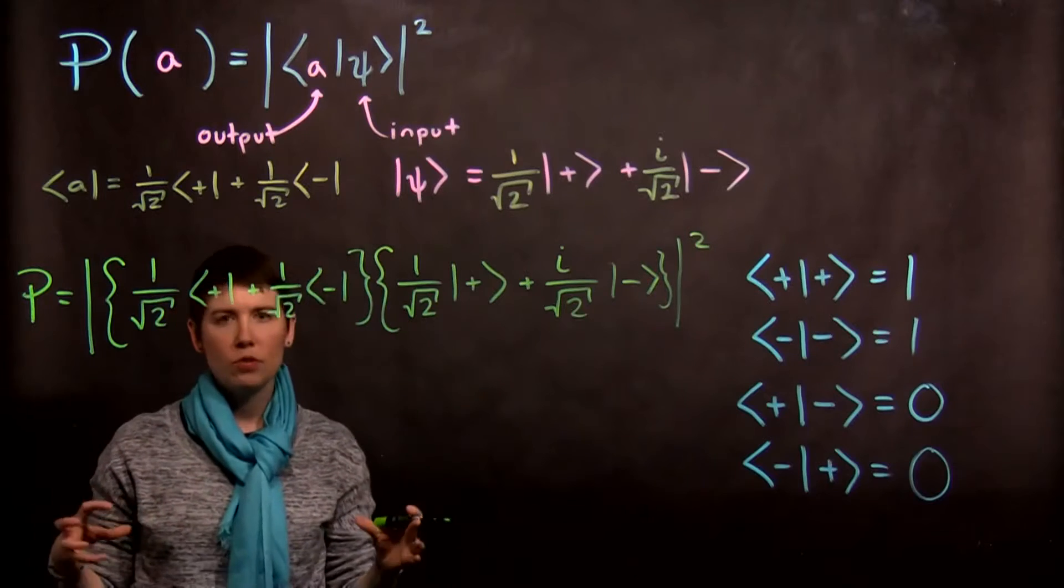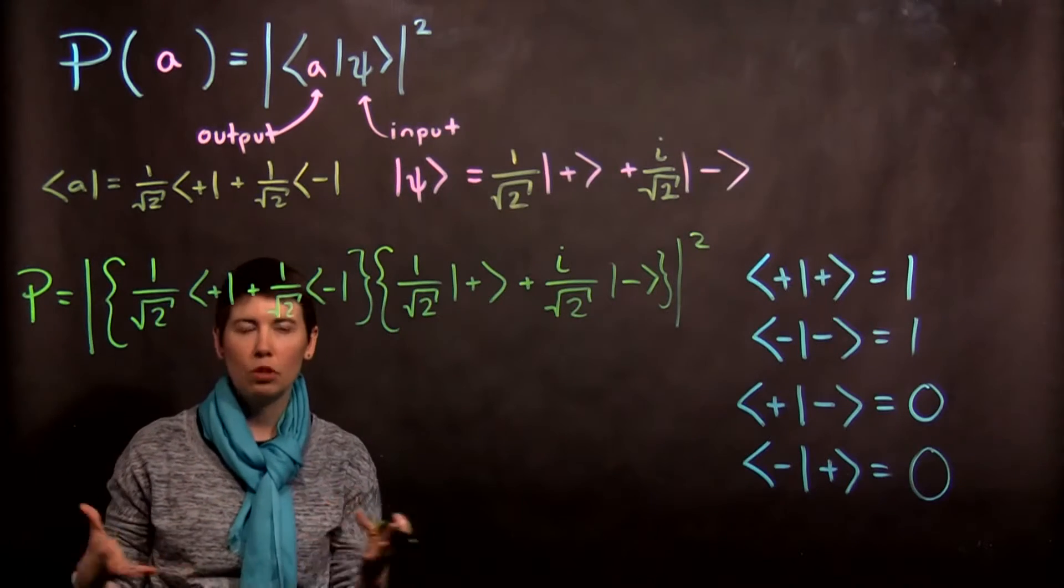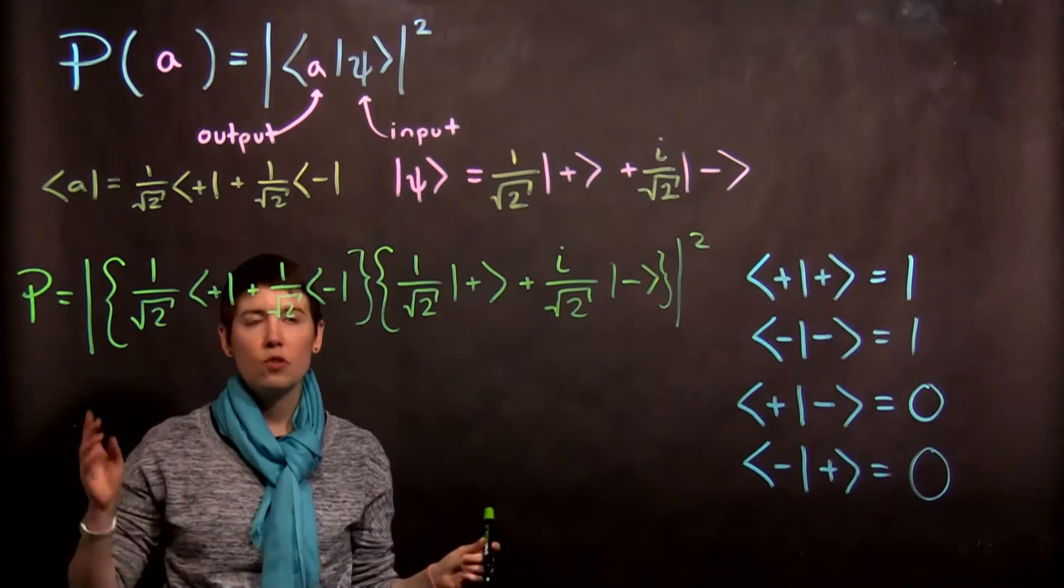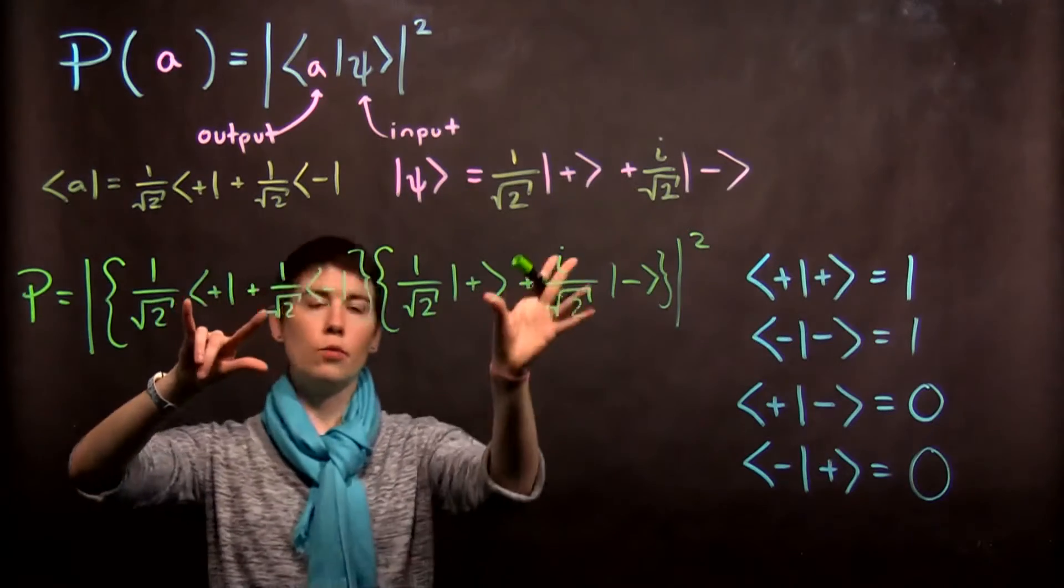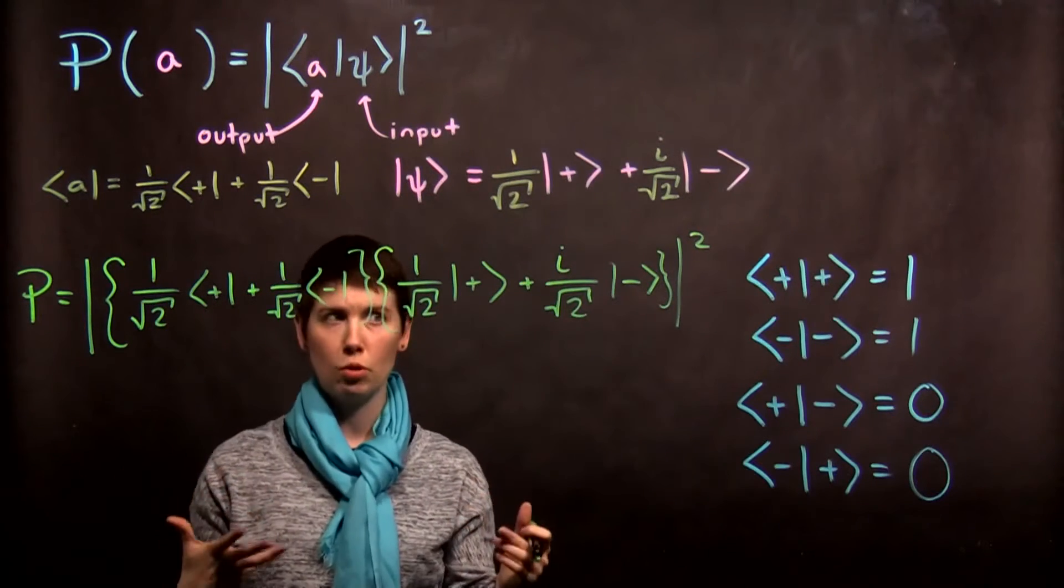Okay, so now what we're going to do is effectively FOIL. We're going to just distribute. So you can see that we have two terms here, we have two terms here. So that's going to give us four total terms.